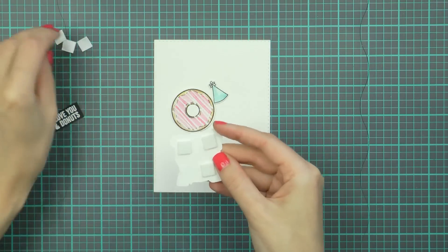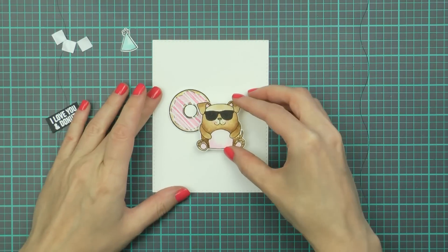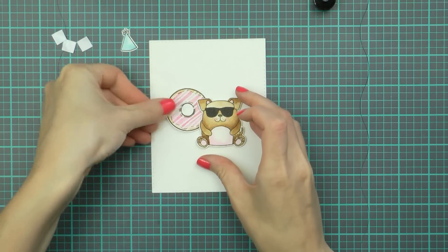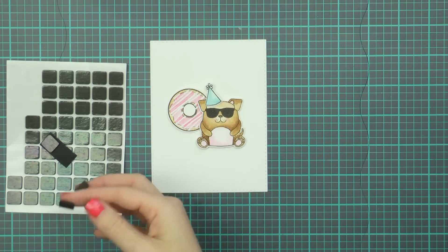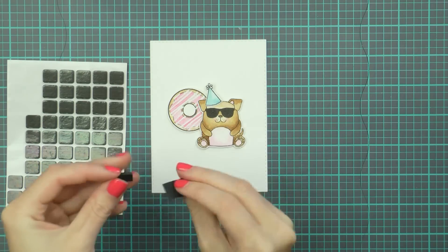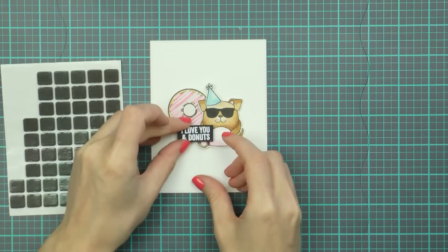I used foam adhesive for the puppy, I wanted to have him popped up on the card. I used glue for the donut and the party hat and then to adhere the sentiment I had to double up on foam adhesive on one side so that it would stay level on the card as it was overlapping the puppy slightly.